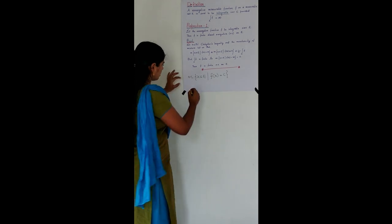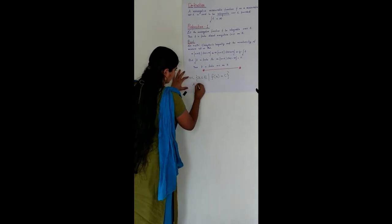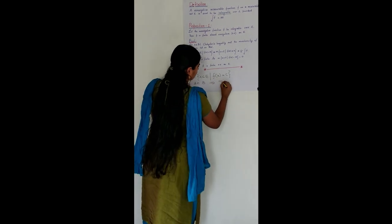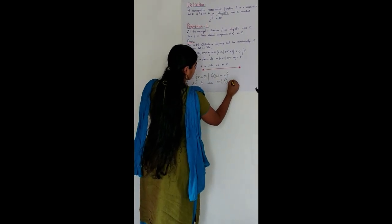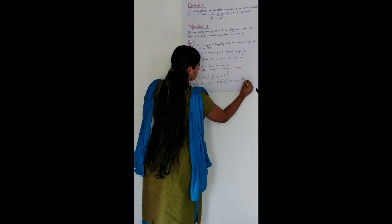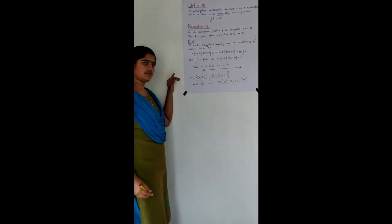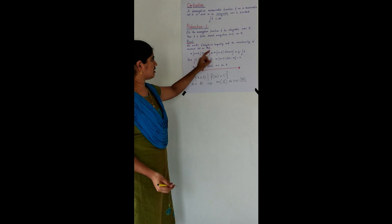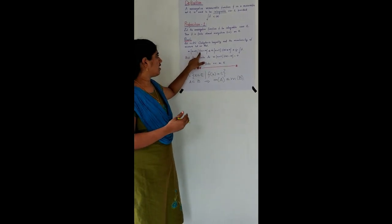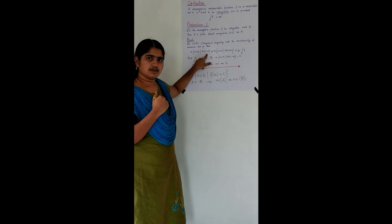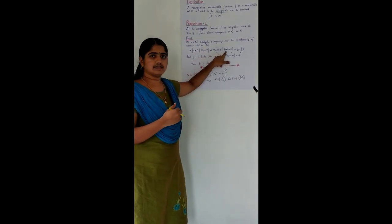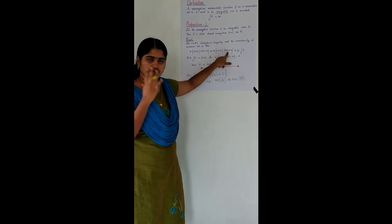We know that measure has the property of monotonicity: if A is a subset of B, then the measure of A is less than or equal to the measure of B. Now, you collect all X in E such that F(X) equals infinity — that set is a subset of the set of all X in E such that F(X) is greater than or equal to N.